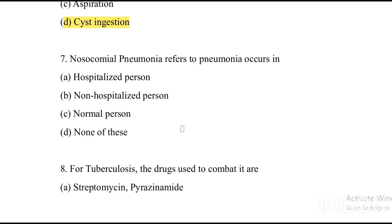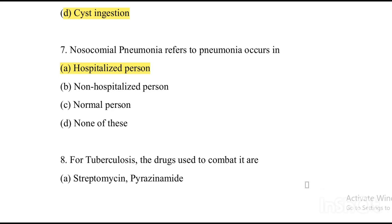Next question about hospital-acquired pneumonia: Option A: hospitalized person. Option B: non-hospitalized person. Option C: normal person. Option D: none of these. The answer is Option A, hospitalized person.